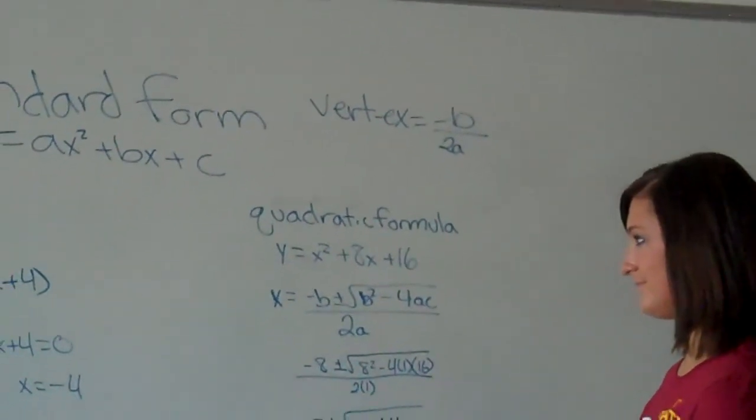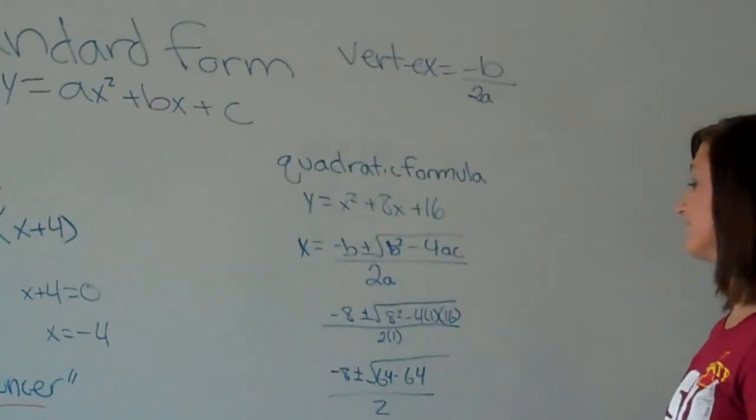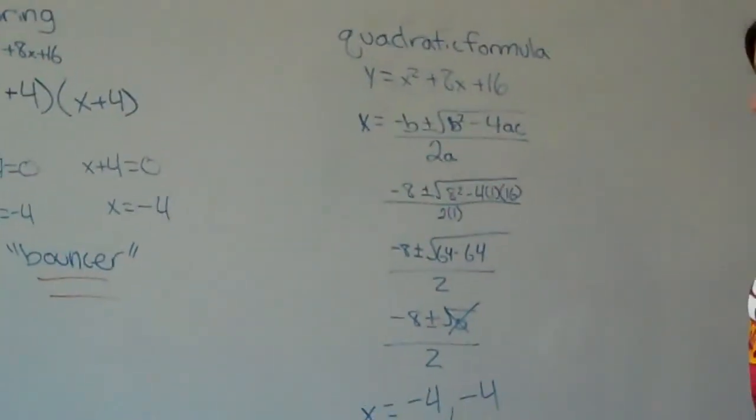The negative 4s are obviously going to be your vertex. So it would just be 0, negative 4, or negative 4, 0.